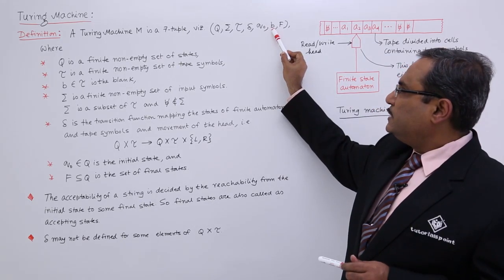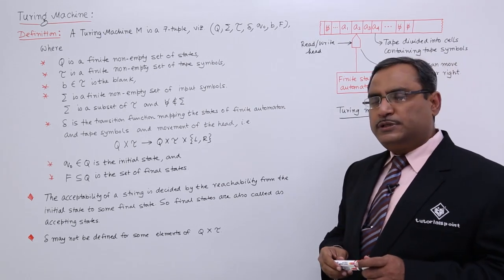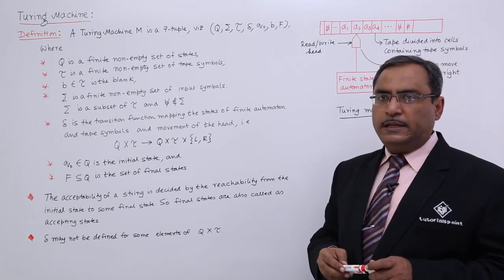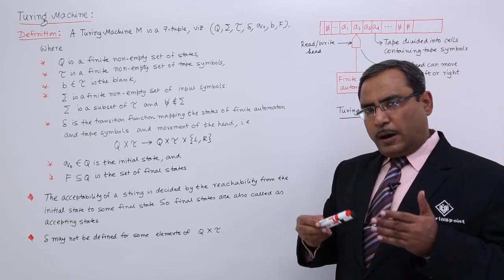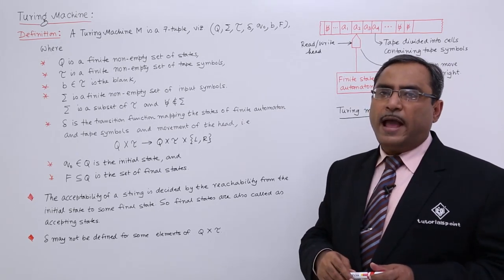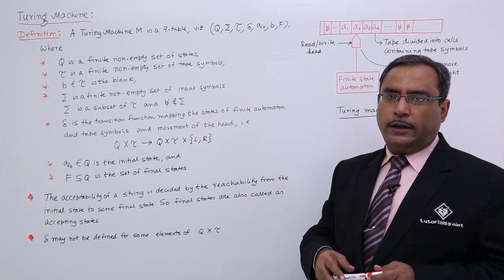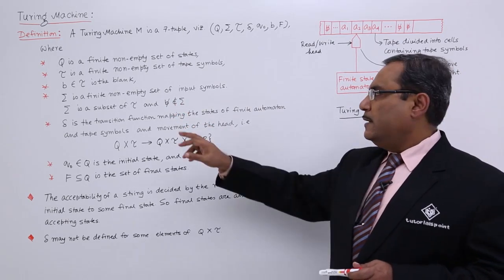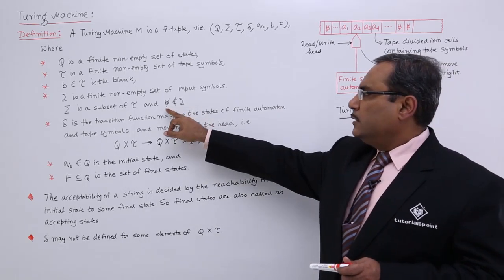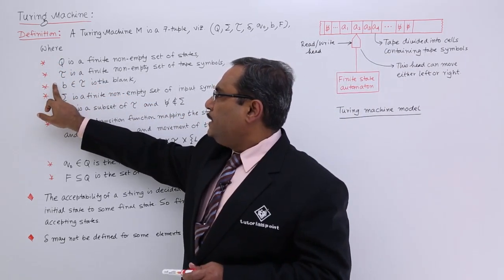Sigma is a finite non-empty set of input symbols, or input alphabets. Sigma is a subset of tau, meaning sigma will contain some of the tape symbols, but sigma cannot contain the blank character — blank is not included in sigma. That is the definition of Q, tau, B, and sigma.